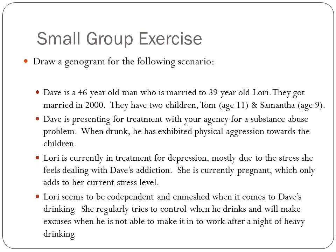Given this information, construct a genogram with two generations — Dave and his wife Lori, and their children Tom and Samantha. Pay attention to the key information: individual ages, Dave's substance abuse problem, his physical abuse toward the children, Lori's depression and pregnancy, their marriage year of 2000, and the enmeshment between Lori and Dave. Pause the video, construct the genogram, and we'll review on the next slide.